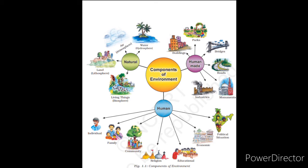The second component of environment is human-made environment. Human-made environment means all those components which are made by human beings, like parks, buildings, industries, roads, bridges, etc. All the things present in our environment which are made by us for our needs are known as human-made environment.